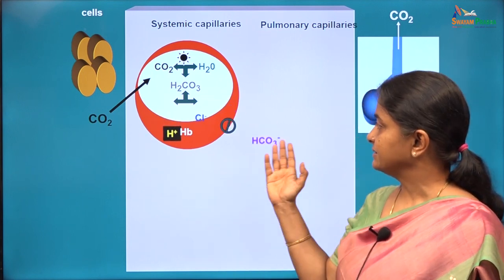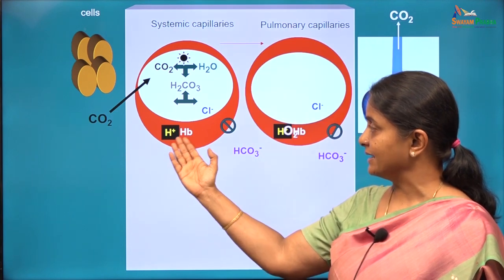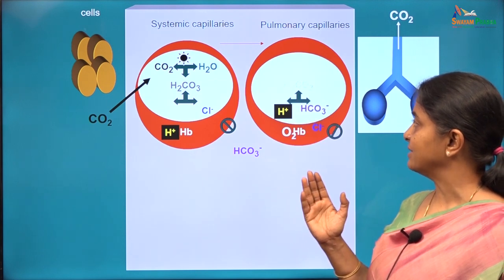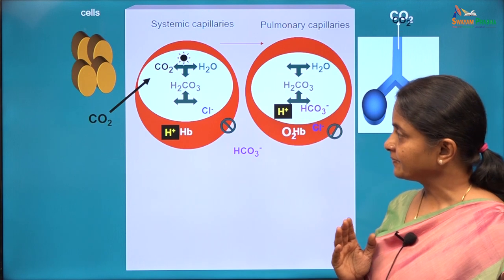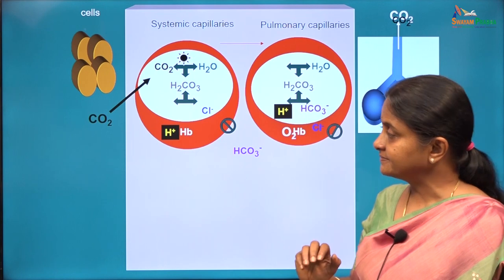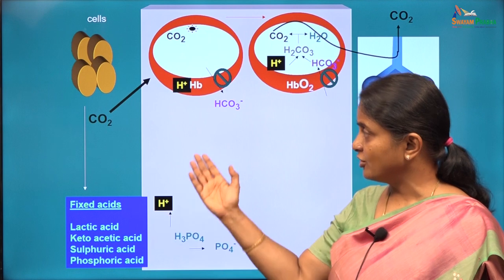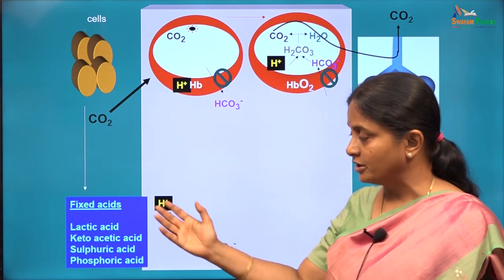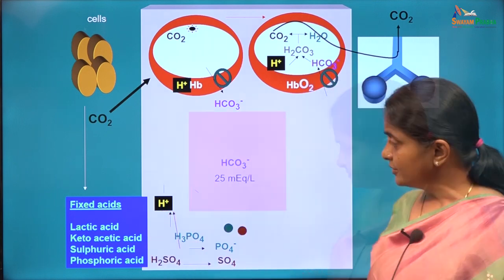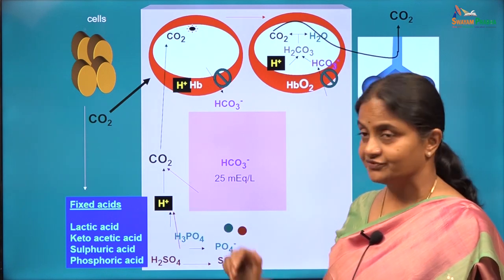Carbon dioxide is handled by red blood cells and the acidity of carbon dioxide is managed by hemoglobin till the carbon dioxide is reformed within the red blood cells and eliminated in the lungs. Carbon dioxide is therefore called a volatile acid. The non-volatile or fixed acids cannot be blown off in the lungs and therefore they are called fixed acids.